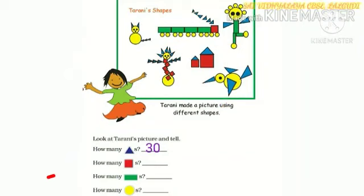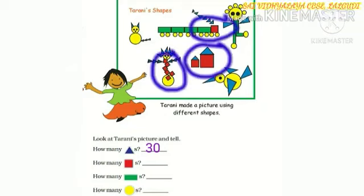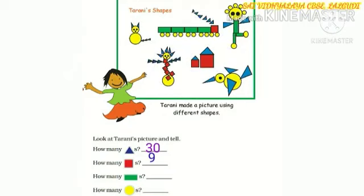Next question. How many squares? Now, we have to count all the squares are given in the picture. Let's count these squares. Here, all the squares are in red color. Totally, we have 9 squares.